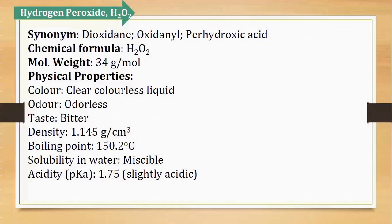Good afternoon students. Today we are going to discuss the second part of antimicrobials starting from hydrogen peroxide. Hydrogen peroxide ka formula hai H₂O₂. It is also known as dioxidane, oxidanyl, or perhydroxic acid.